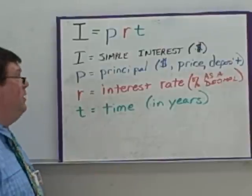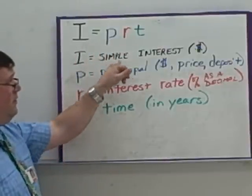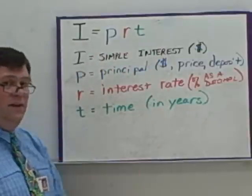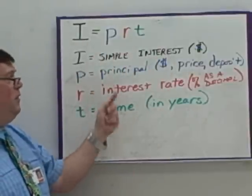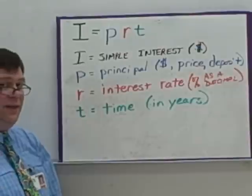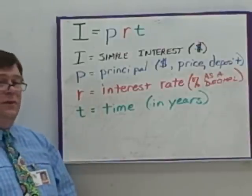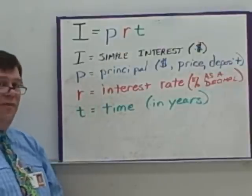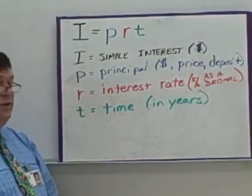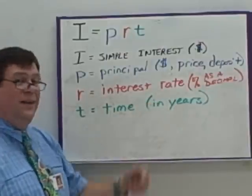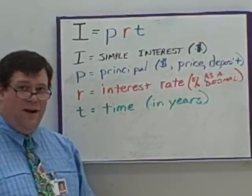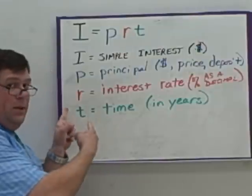This is the formula for simple interest: I equals PRT. I is the simple interest in money — not a percent, it's the interest in dollars. P is the principal, also in money — it can be called the price or the initial deposit. R is the interest rate, which is the percent you're earning at. We're always using an annual interest rate, and it must be entered as a decimal, so if they give you a percent sign, divide by 100 before plugging it in.